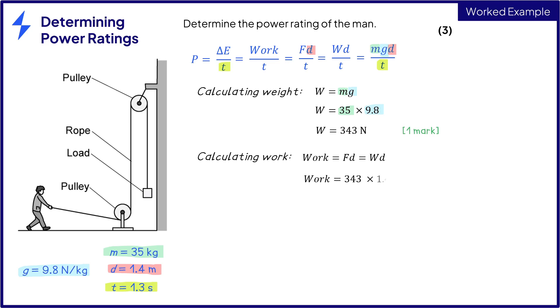So then we substitute in the known values, the weight we just calculated at 343 newtons and the distance at 1.4 meters and that gives work done is equal to 480.2 newton meters or joules and that's the second mark.